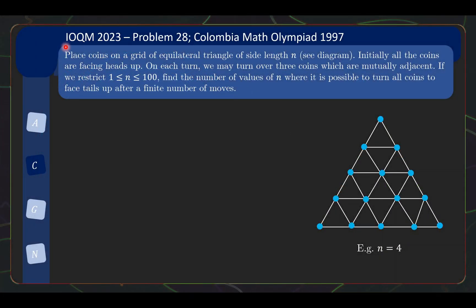So as I mentioned, this is from the IOQM 2023. It's problem 28 out of 30. But it's also a problem from the Colombia Math Olympiad 1997, which is a proof-based Olympiad. So it's quite interesting to see what the proof for the problem will be like.